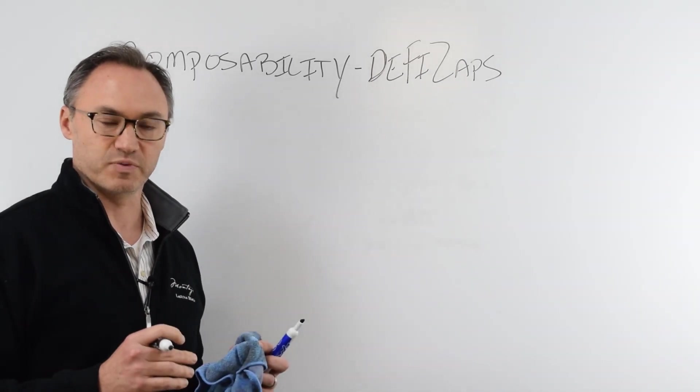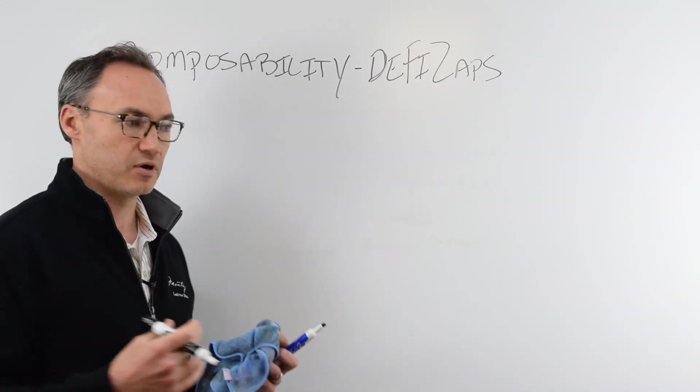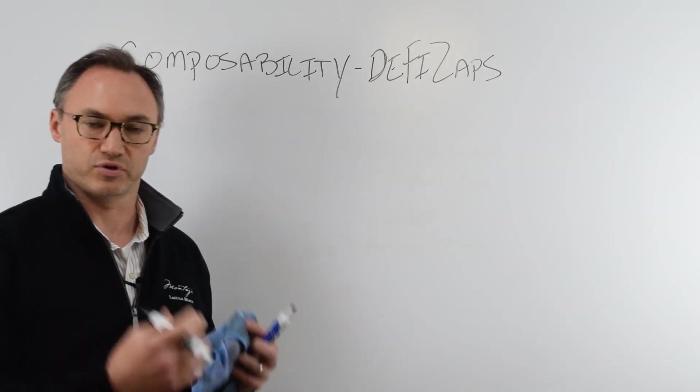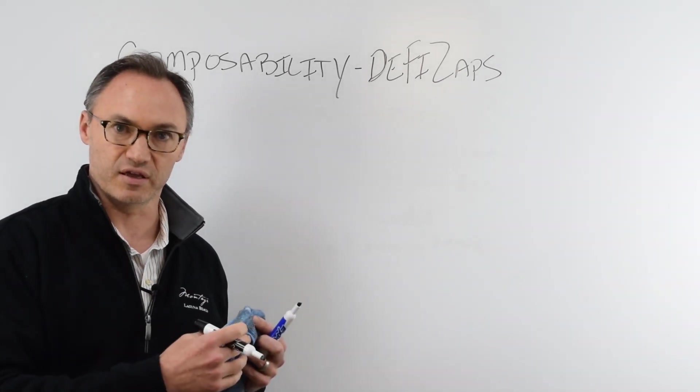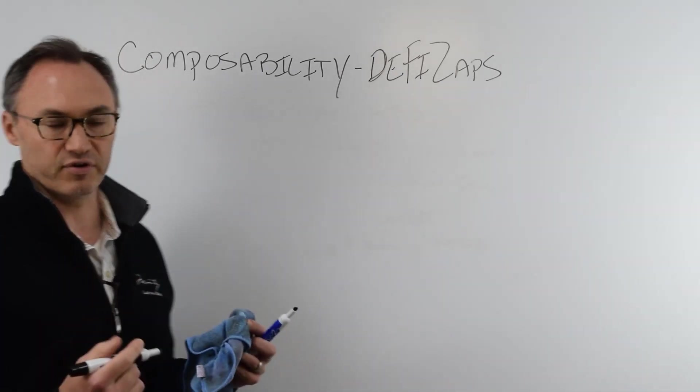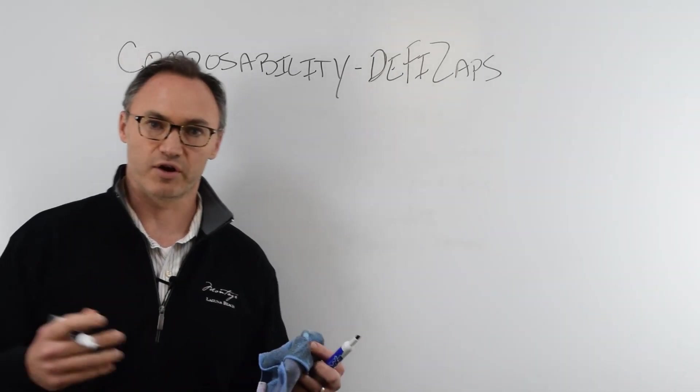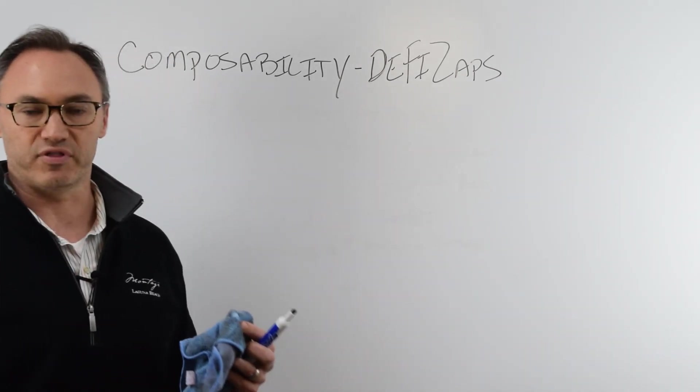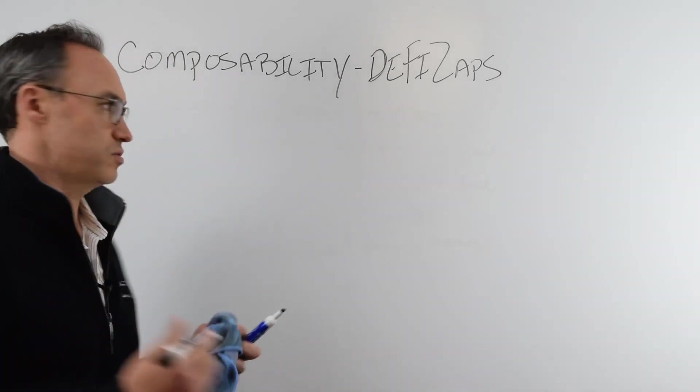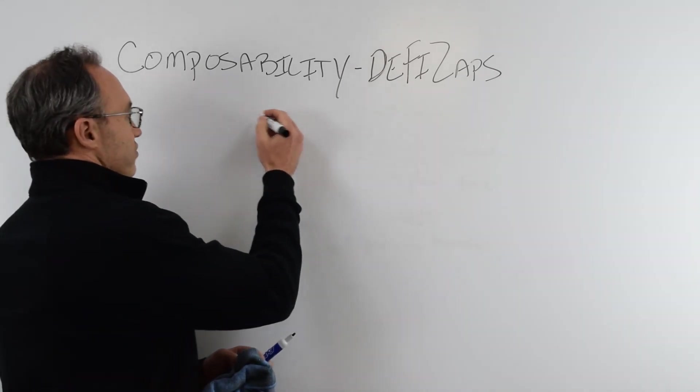When they layer the different investments on top of each other, they call them a zap. And each zap might have two, three, four different protocols or two, three, four dApps that it's hitting to create my position. So it turned out I was some sort of moderate investor and I came up with the maker pool swap.